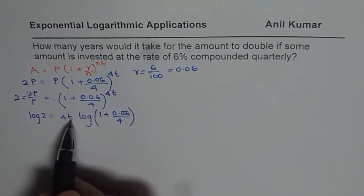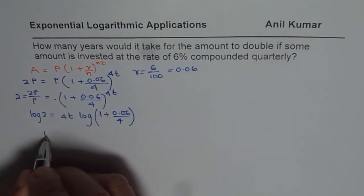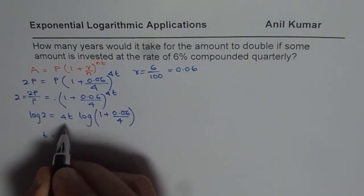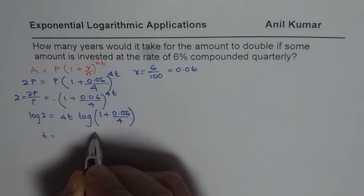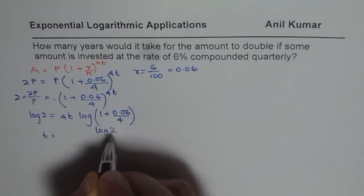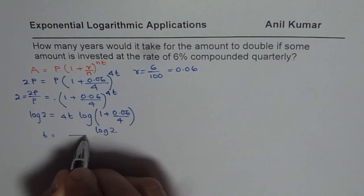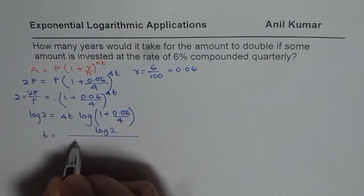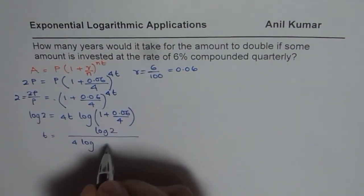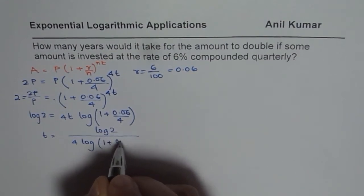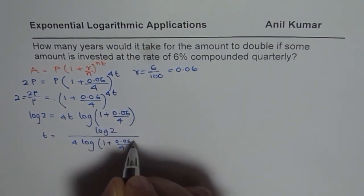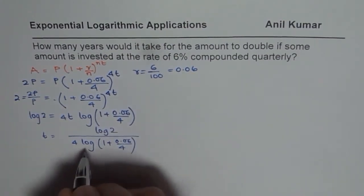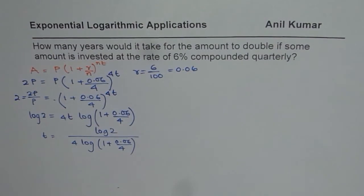Now we can isolate T. So T equals log of 2 in the numerator, divided by 4 times log of 1 plus 0.06 over 4. That is the value of T.